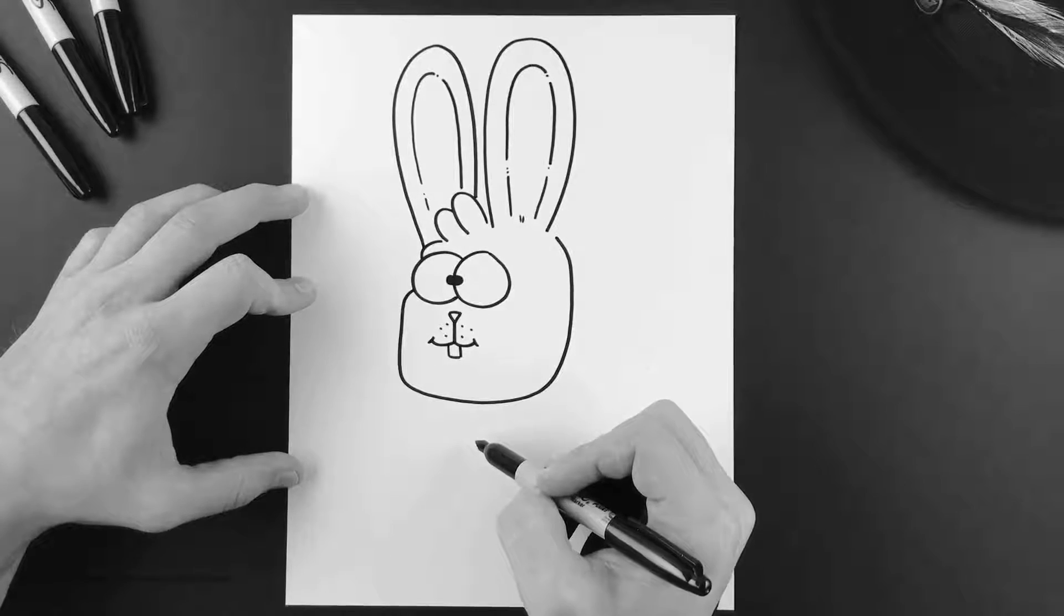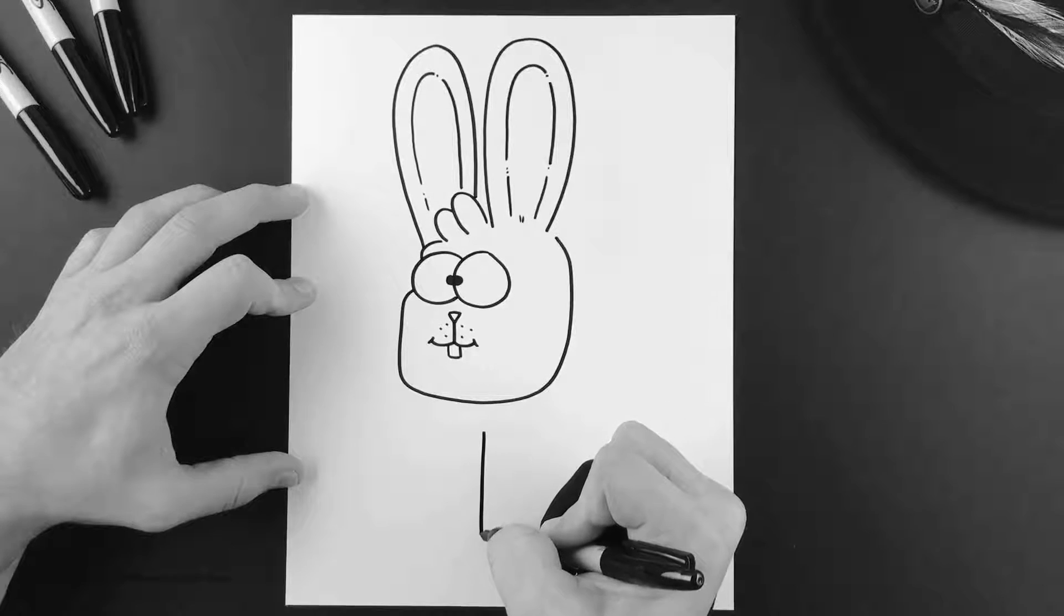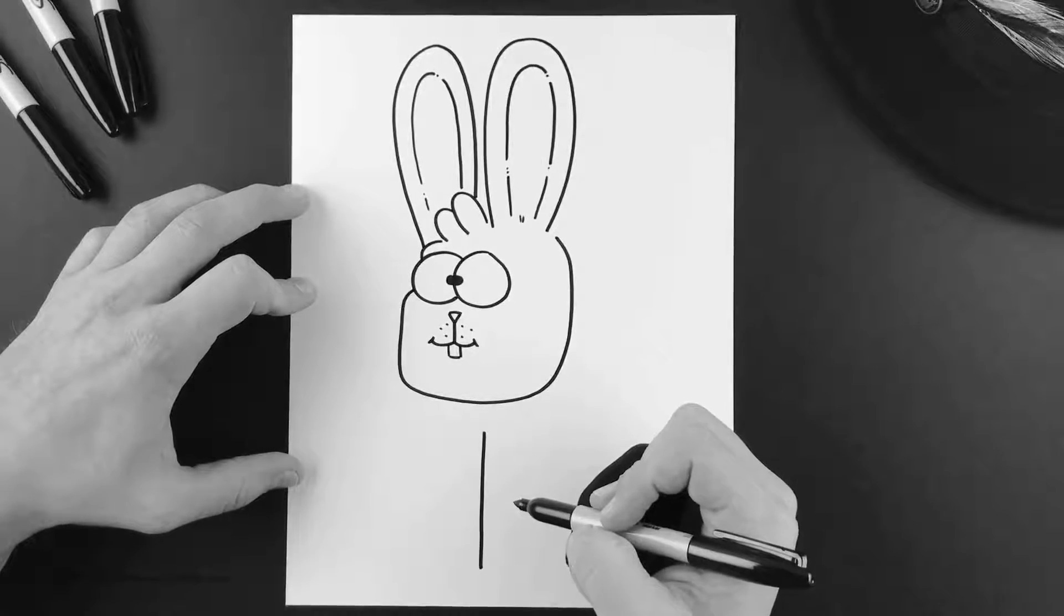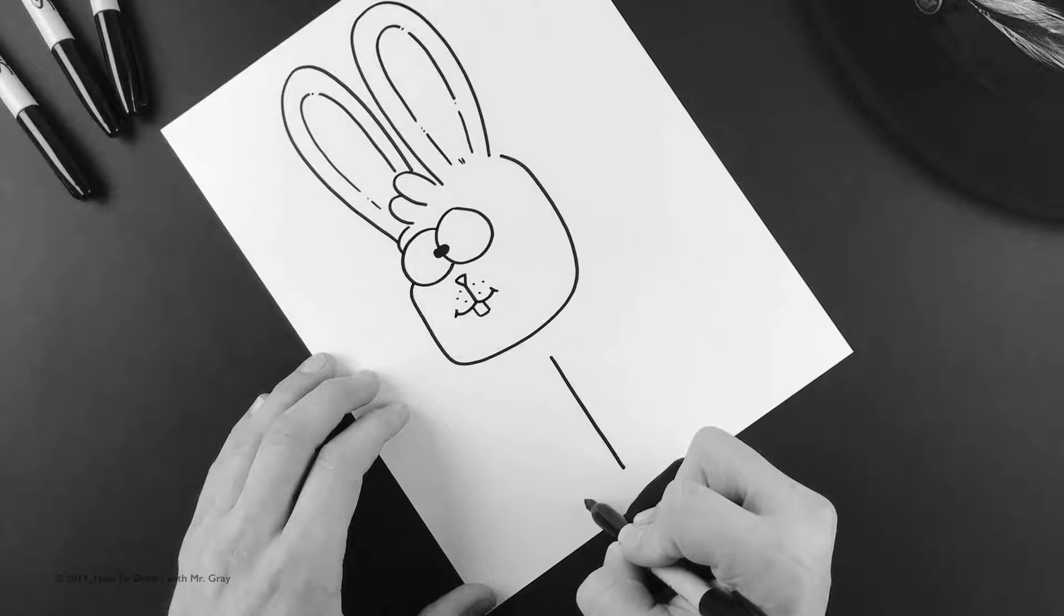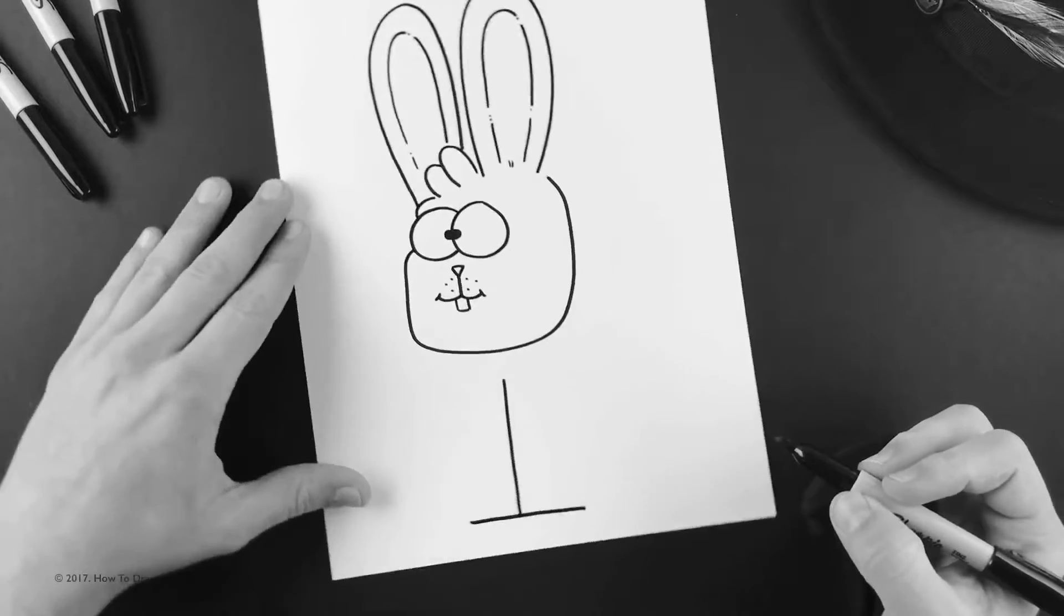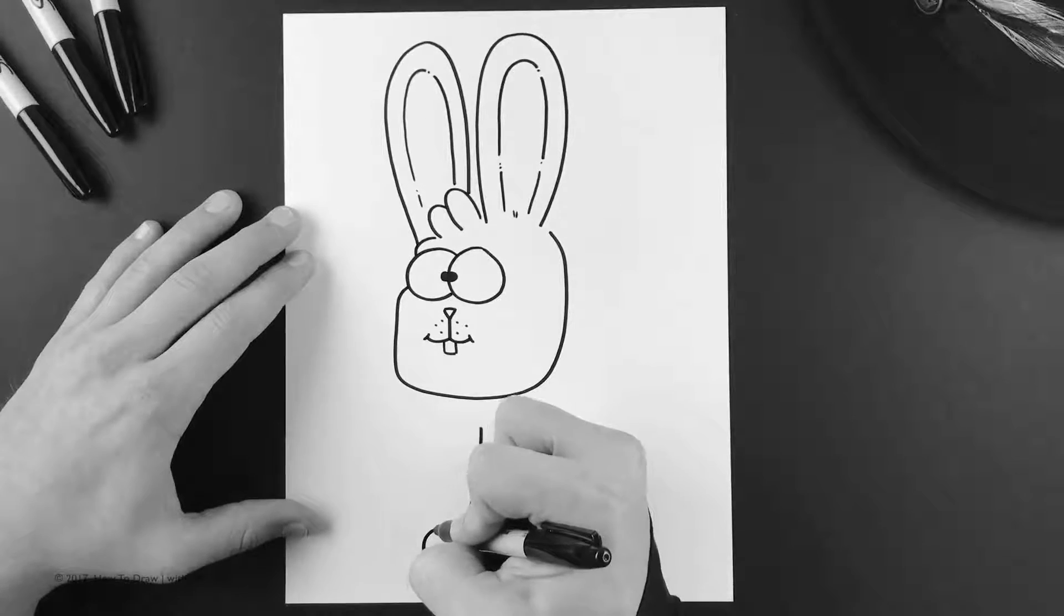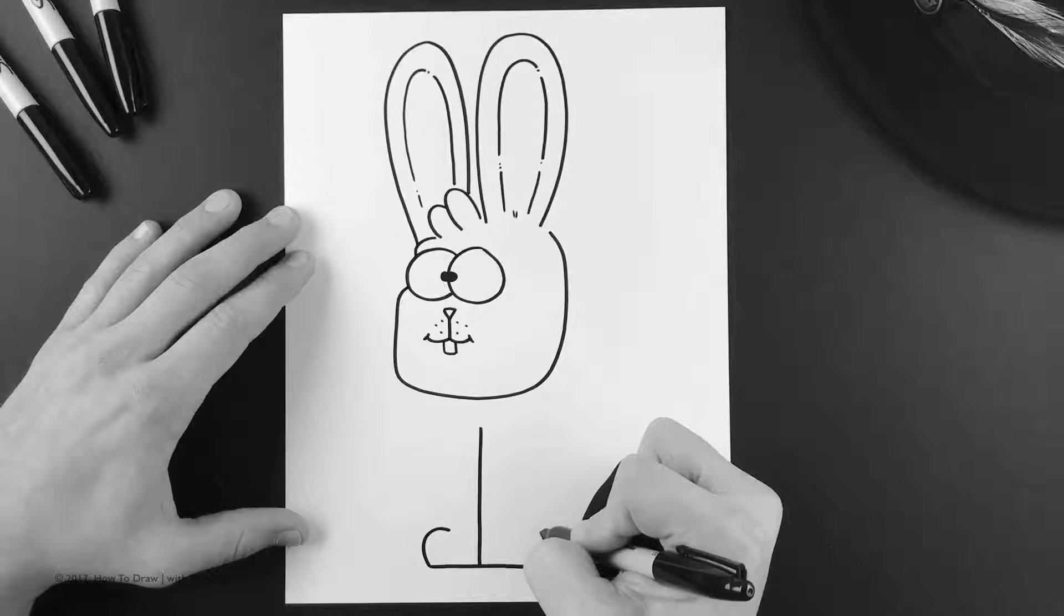Now right from the center of his head we're gonna do one vertical line like this. These are gonna be his little front feet. So next we want to go ahead and do one line across like that, and then we're gonna do one paw up like that, little half C's.